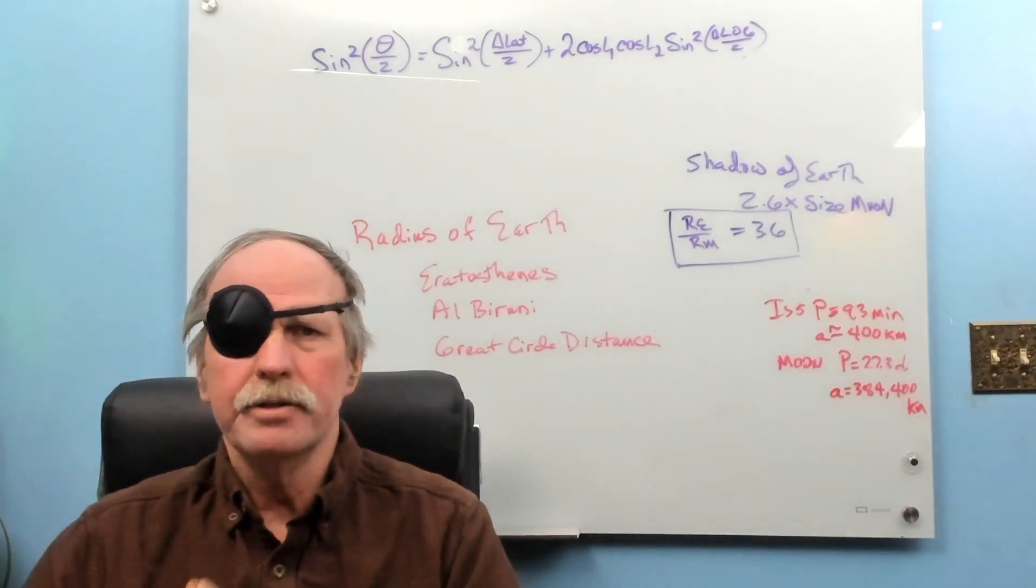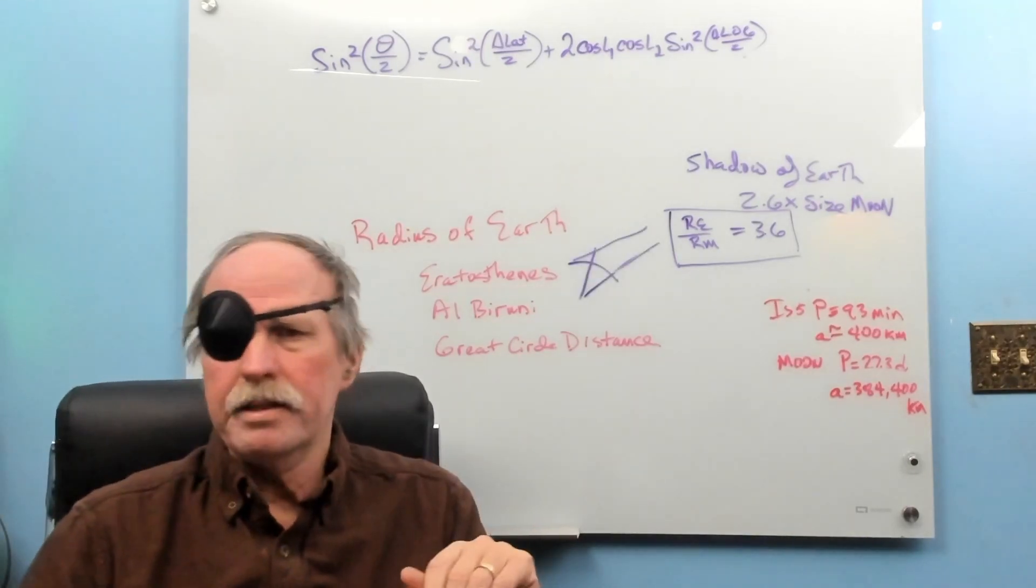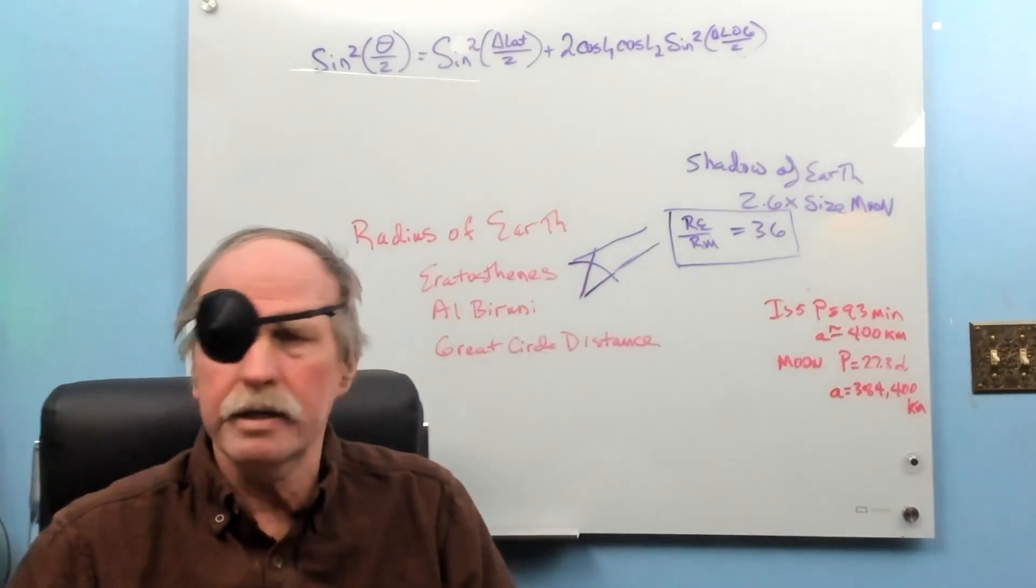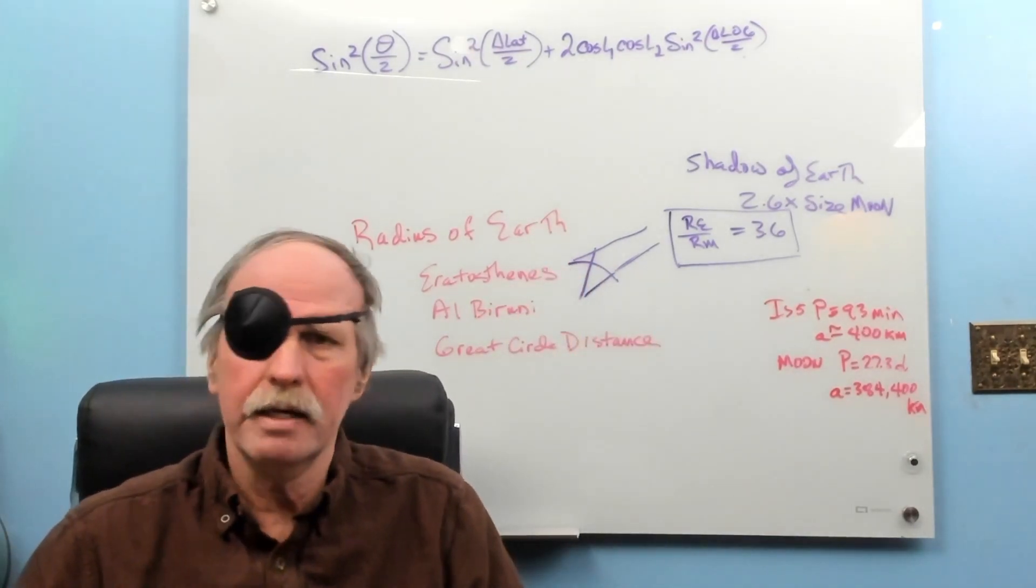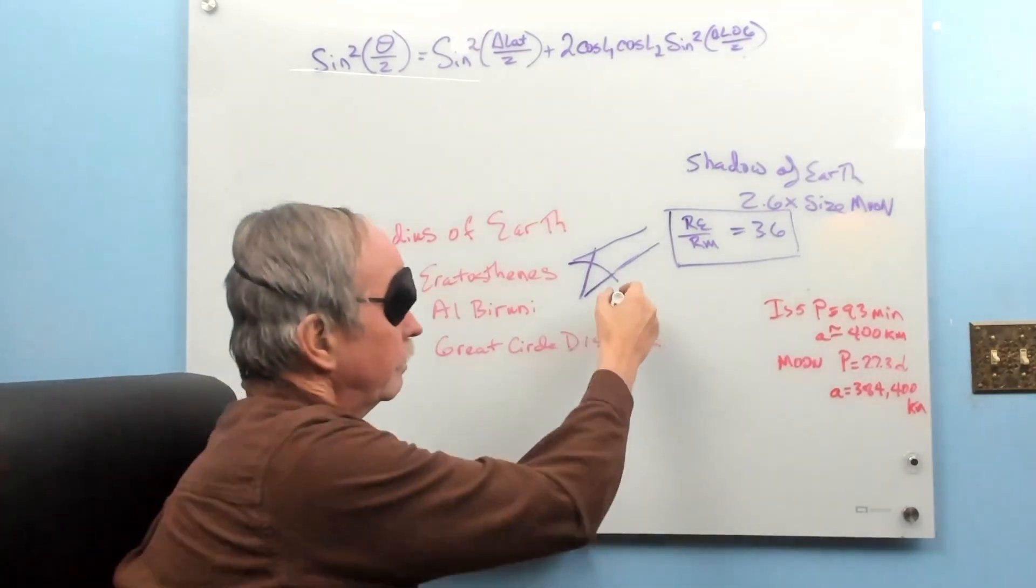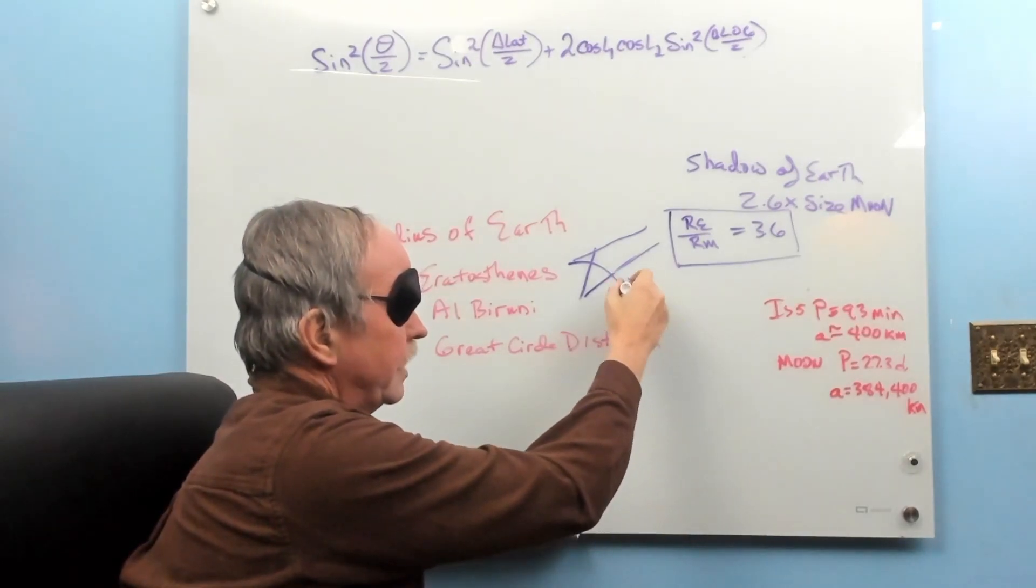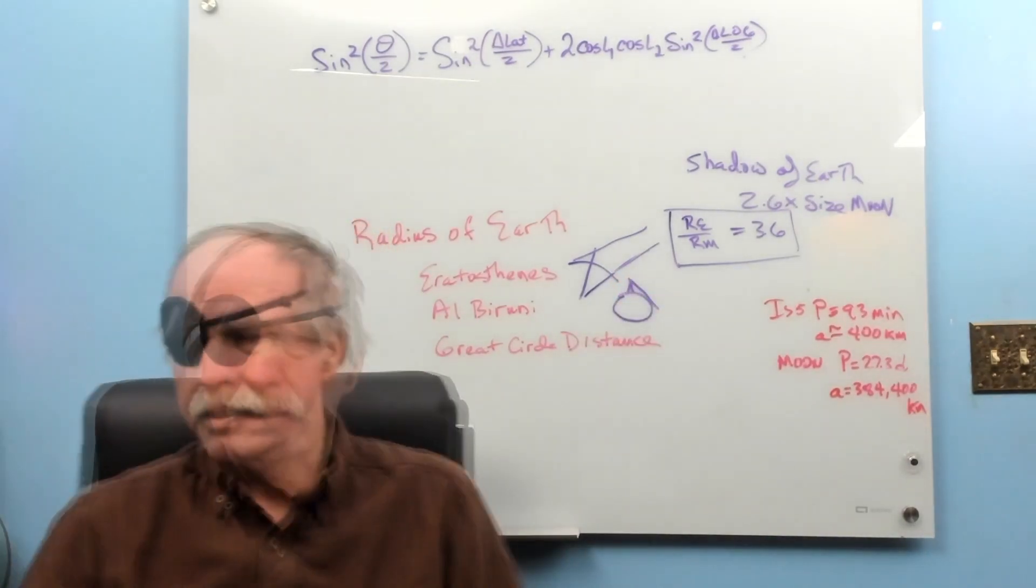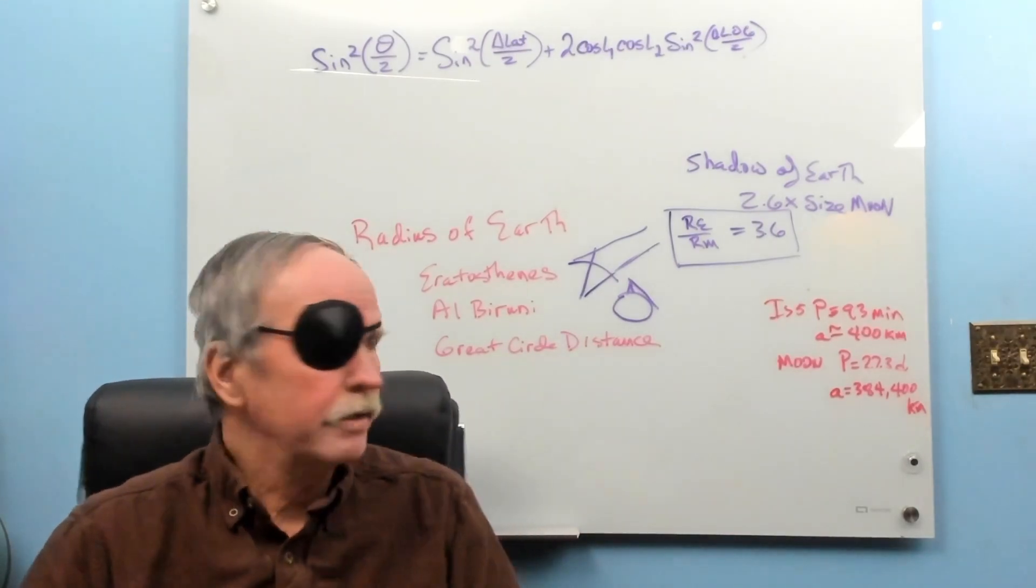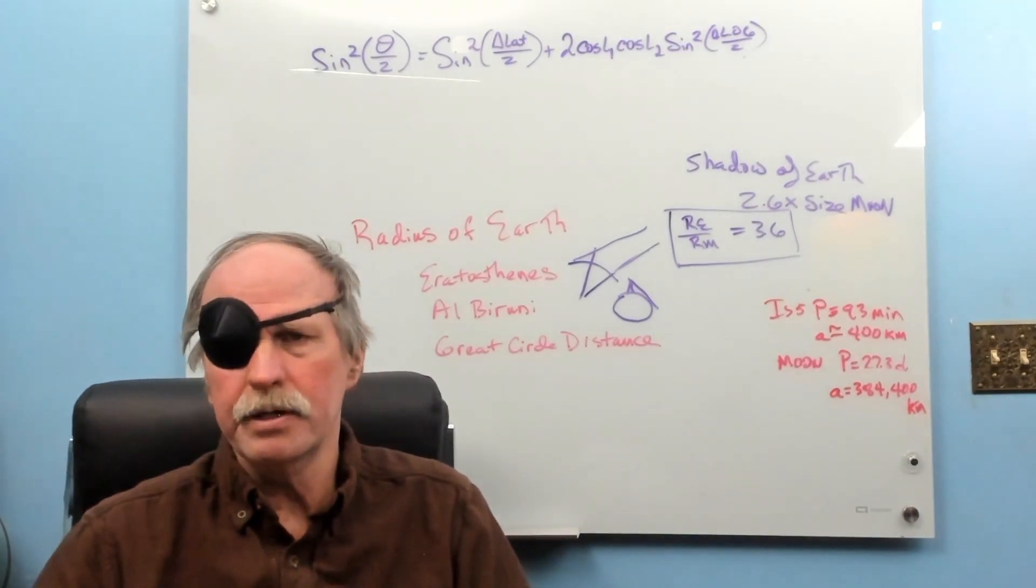So far we've measured the radius of the Earth by a variety of different means. We looked at the method of Eratosthenes where we looked at the shadow cast in Alexandria when the sun shone directly down a well in Syene. We looked at Alberuni where we had the height of a mountain and we measured down to the horizon. And then I've recently demonstrated the radius of the Earth by looking at great circle distances between the cities of Sydney and Perth in Australia.